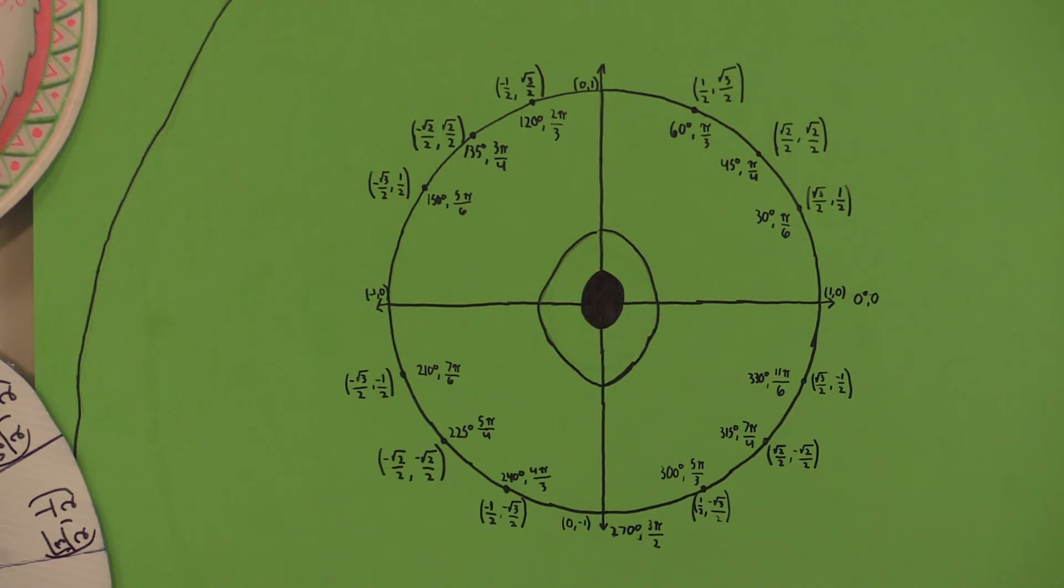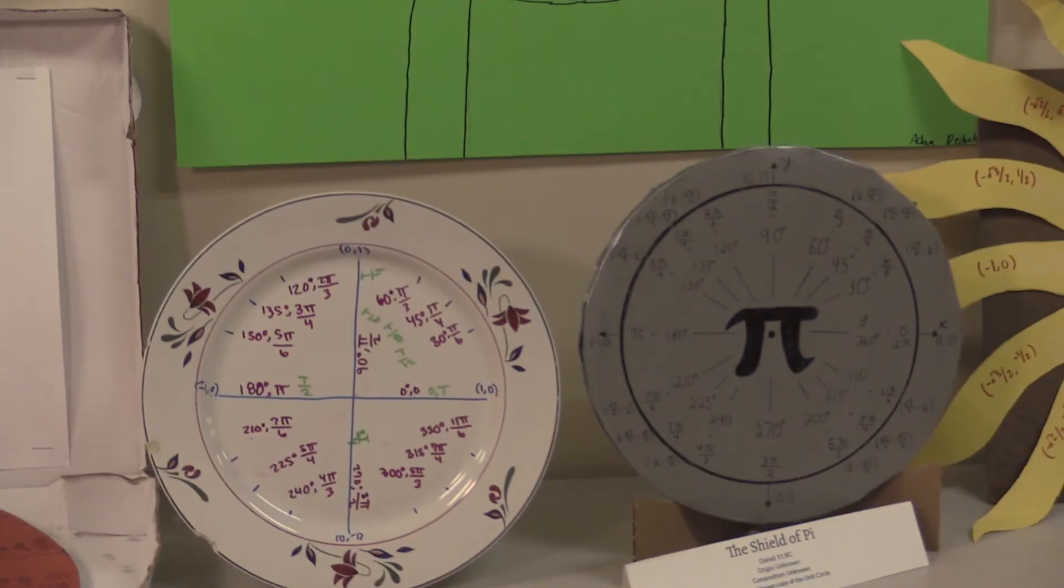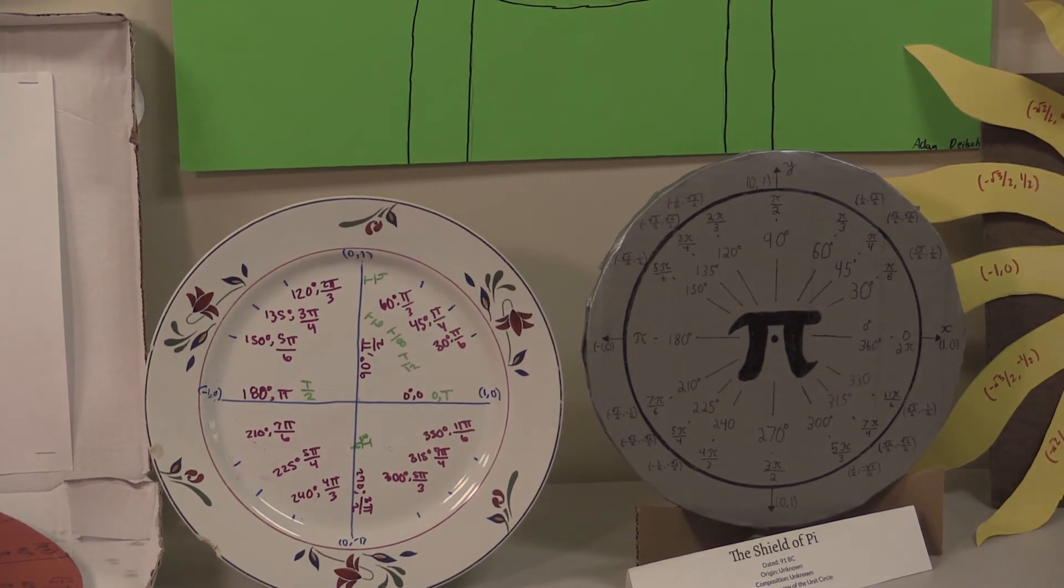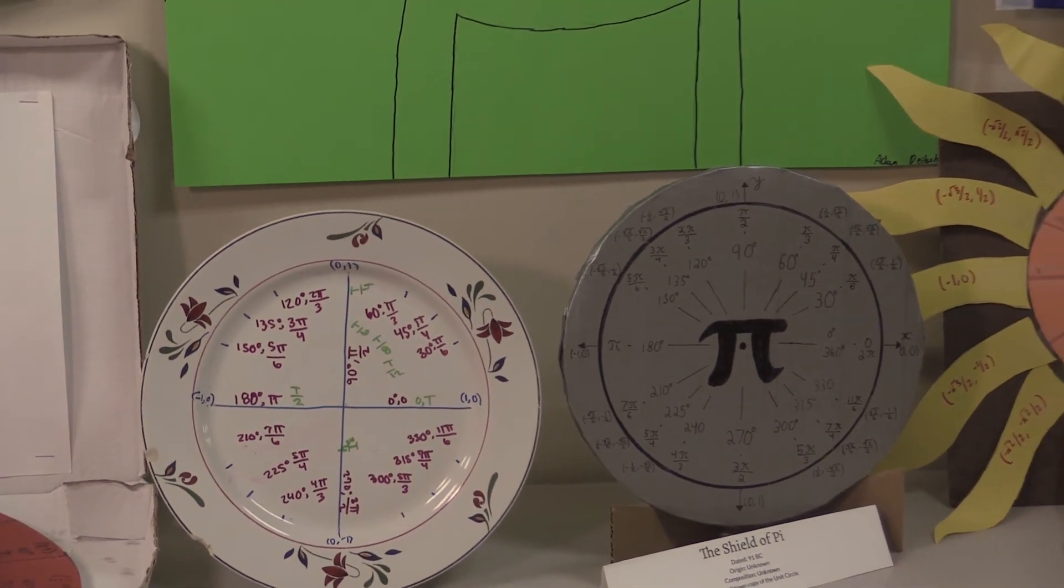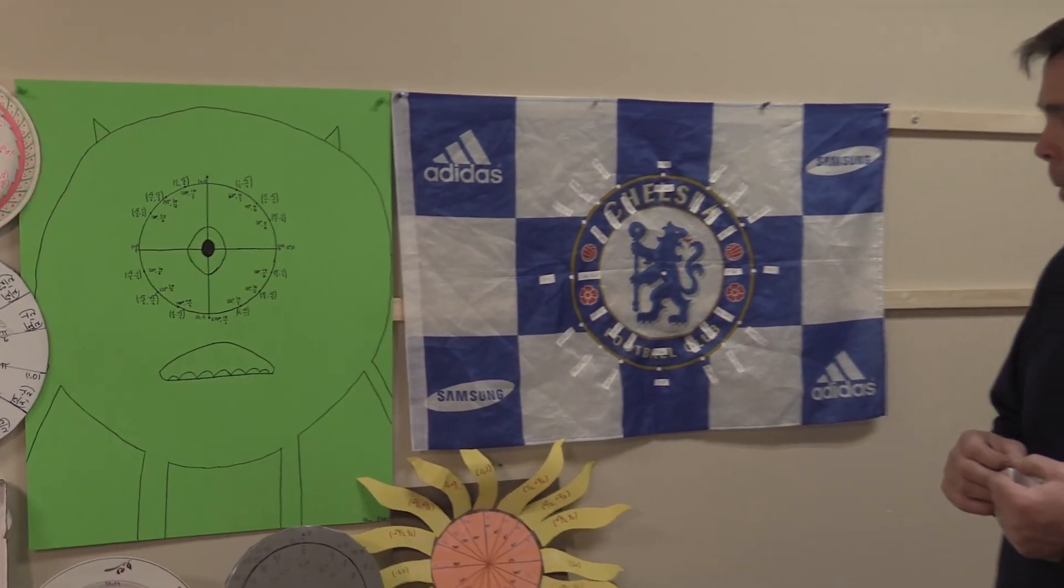When students first see a unit circle, they really don't know the meaning of it. But by introducing them to it as a project, they own the unit circle a bit better. They actually write these numbers down, look at their meaning more carefully, and have a bit of fun with it.